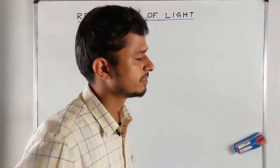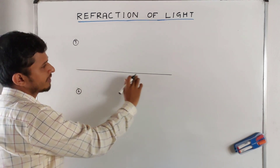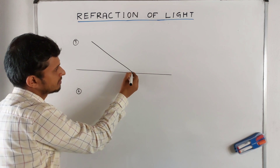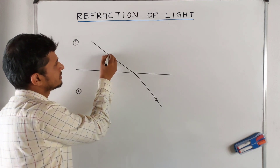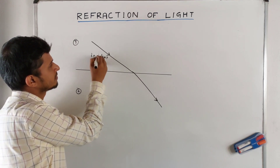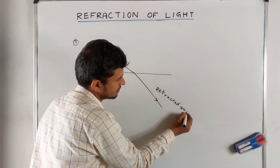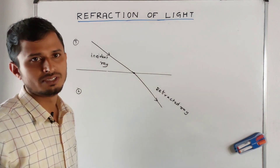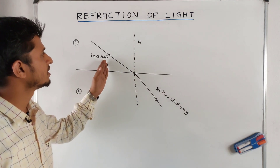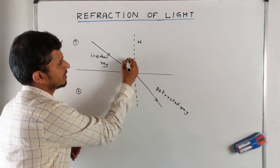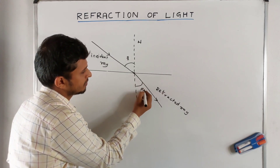Refraction of light. Consider two media: this is medium 1 and this is medium 2, with a refracting surface between them. Let a ray of light strike on the surface and move in this direction. This is the incident ray and this is the refracted ray. The point is called the point of incidence, and this is the normal. The angle between the incident ray and the normal is called the angle of incidence, and the angle between the refracted ray and the normal is called the angle of refraction.